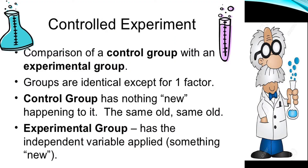Here is the fundamental idea of a controlled experiment. We're going to compare two groups called a control group and an experimental group. These groups are treated exactly the same except for one factor called the independent variable. The control group we do nothing to, but the experimental group gets this treatment called the independent variable. Then later, we measure the two groups on something else called the dependent variable.